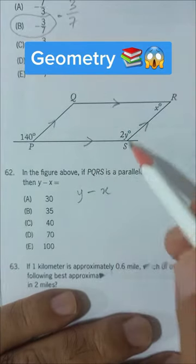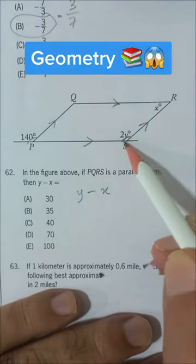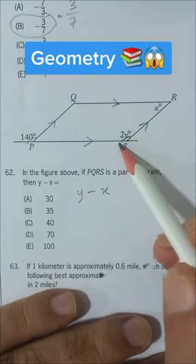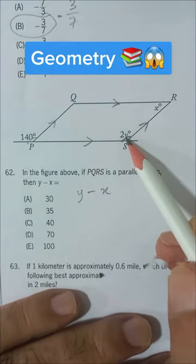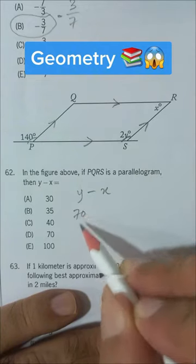And when two lines are parallel, this angle and this angle, they are called corresponding angles, and they are equal. If this is 140, this 2Y is 140 also. If 2Y is 140, then only Y is 70, half of that, right?